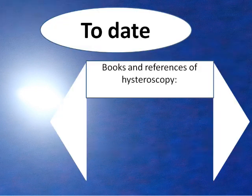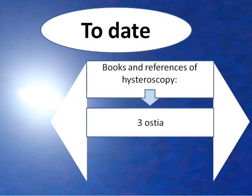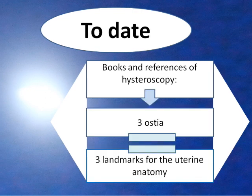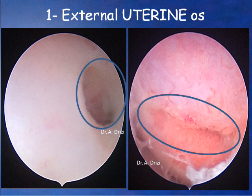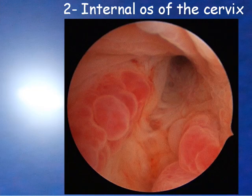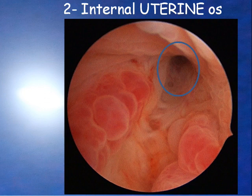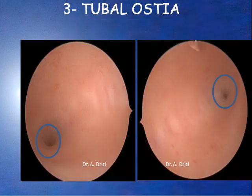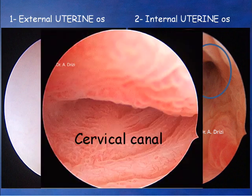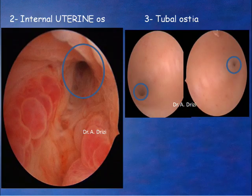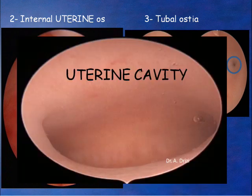To date, all the books and references of hysteroscopy define three ostia as landmarks for uterine anatomy: the external ostium of the cervix, also termed external uterine ostium; the internal ostium of the cervix, named internal uterine ostium; and the tubal ostia. The two first ostia delimit the cervical canal, and the two last ones the uterine cavity.